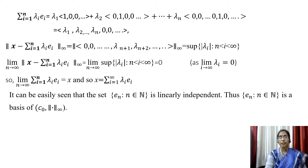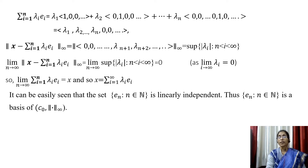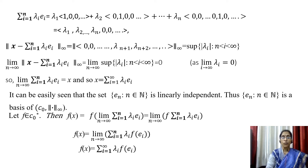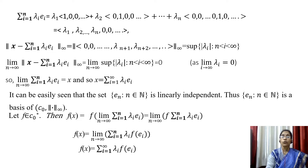So we have expressed x as a linear combination of the set {eₙ : n ∈ ℕ}. It can easily be seen that this set is linearly independent, since any finite subset of it is linearly independent, and so this infinite set is also linearly independent. Thus {eₙ : n ∈ ℕ} is a basis of the space C₀.